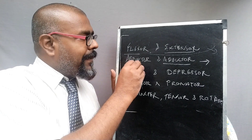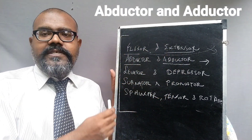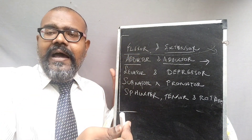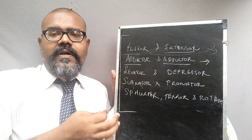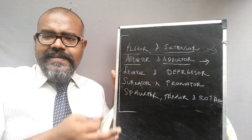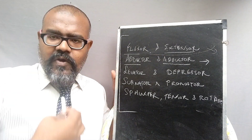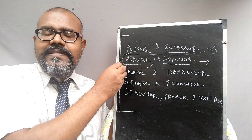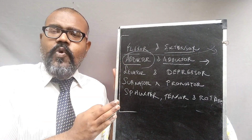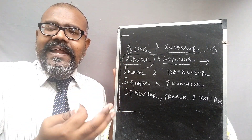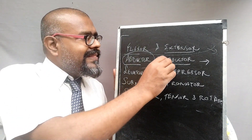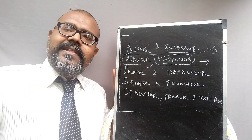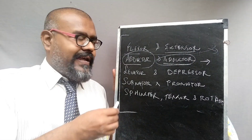The next types are abductor and adductor, which relate to movement of bone away from or closest to the midline. The abductor muscle moves away from the midline of the human body. The adductor is the movement of the muscle closest towards the midline of the human body.